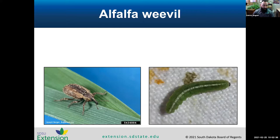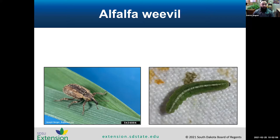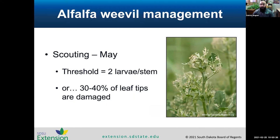You can see the adult beetle — light brown with a dark brown stripe on the back and a long snout on the front, which is characteristic of all weevils. The larvae are small green worms. Alfalfa weevil affects the first cutting and any regrowth. The larvae feed on the growing points and new leaves, and the damage looks like circular holes on the leaves. You can see some pretty severe defoliation caused by these weevils in the picture.